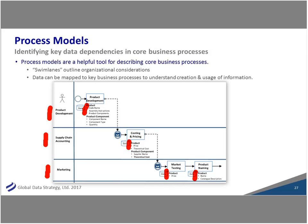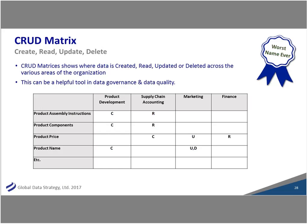A sister tool to the process model is the CRUD Matrix — lovingly given the worst name ever. It basically shows how data is Created, Read, Updated, and Deleted, thus CRUD. So you might see that product development initially creates the product name, but it's really marketing that updates the name and eventually deletes it when branding rights are lost. This is a huge part of the data lifecycle. You can start this in an afternoon — especially helpful when thinking about governance, quality, or enterprise architecture support.